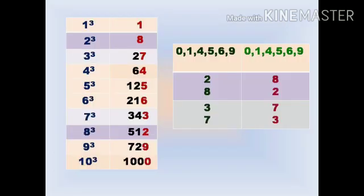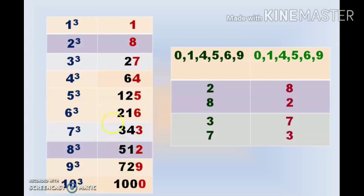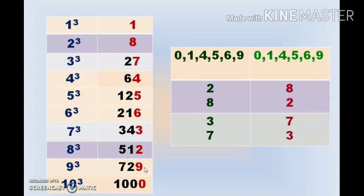I am going to show you another trick. For the numbers that end with 0, 1, 4, 5, 6, and 9, the cube will also end with 0, 1, 4, 5, 6, and 9 respectively. Just see the tabular column: 1 cubed ends in 1, 4 cubed ends in 4, 5 cubed ends in 5, 6 cubed ends in 6, and 9 cubed ends in 9. In other words, for numbers ending in 0, 1, 4, 5, 6, and 9, the cubic root also ends in 0, 1, 4, 5, 6, and 9.